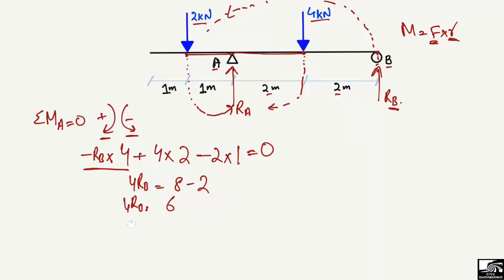Dividing 6 by 4, RB comes out to be 1.5 kN. So RB is 1.5 kilonewtons. Now to find RA, we use the equilibrium equation again.